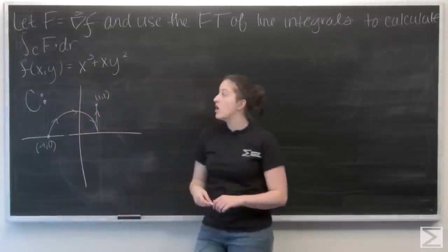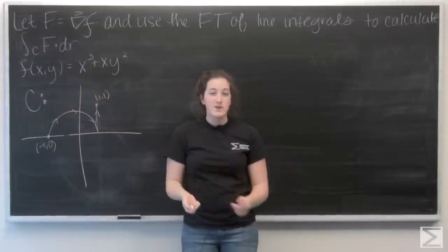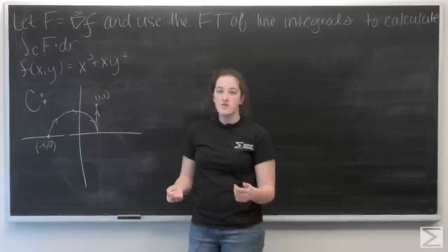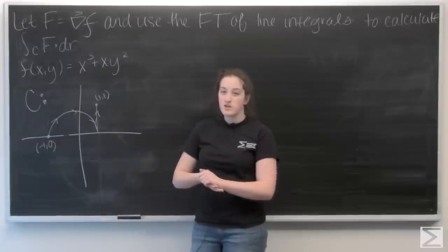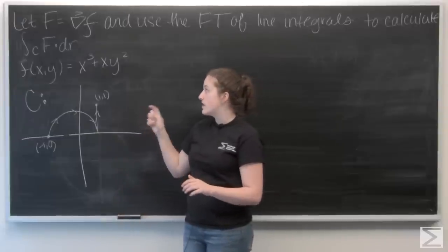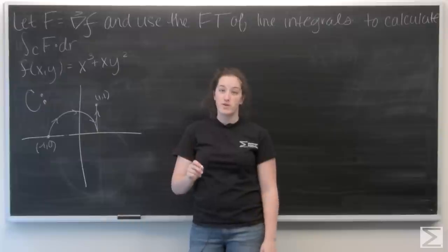Okay, so let's recall what the fundamental theorem of line integrals tells us. It says that if we have a conservative vector field, so the vector field is the gradient of some function f, then the line integral over the curve is just going to be the function value at the end point of the curve minus the function value at the start point of the curve.